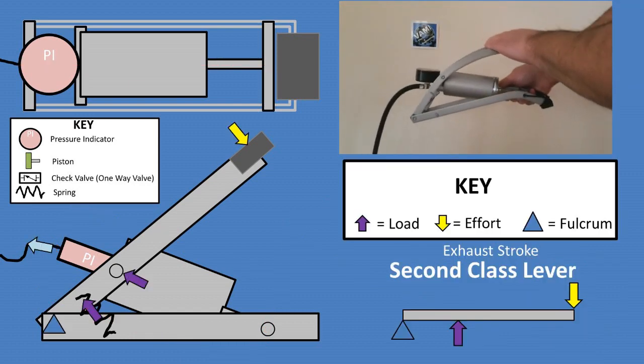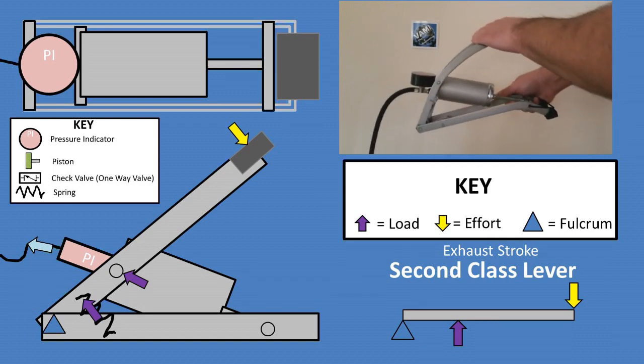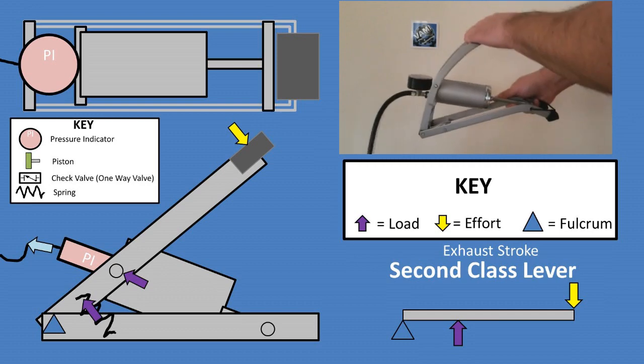For this particular bicycle pump, it is foot operated and acts as a second class lever when going through the exhaust stroke. This means that the fulcrum is on one side of the lever arm, and the resistance or load is at the middle.